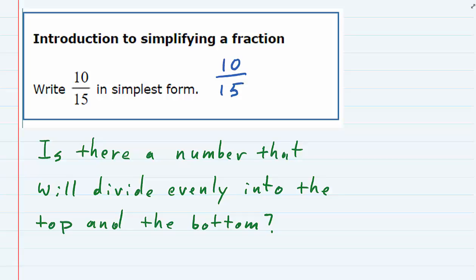So if we think of the numbers 10 and 15, we can see that they are both divisible by 5. So since they're both divisible by 5, we should divide them both by 5.